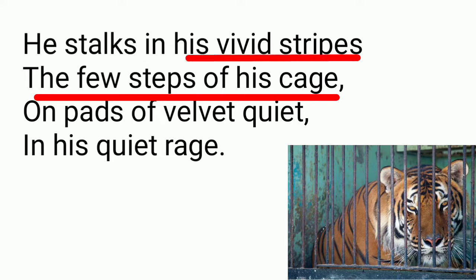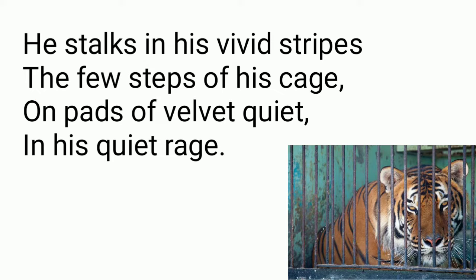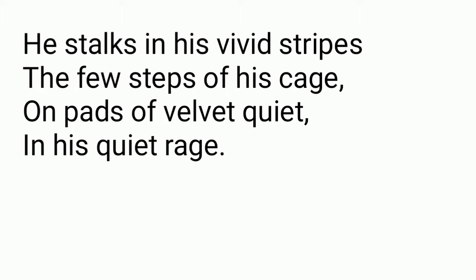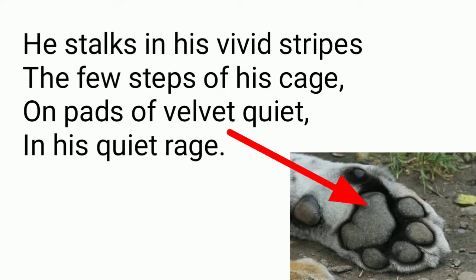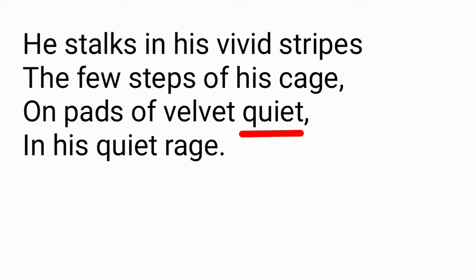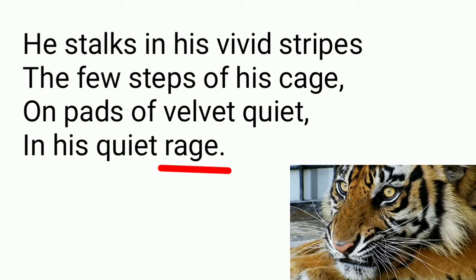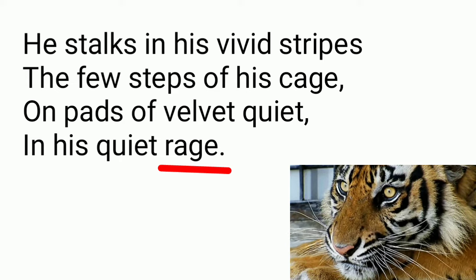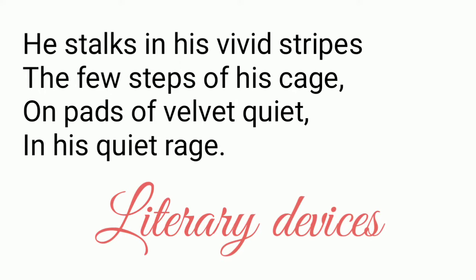The tiger can take only a few steps because the cage is very small and it is not easy to move in it. One cannot hear the tiger's footsteps because he has very soft feet just like velvet. The paws are covered with velvet, and that is why when the tiger walks, no sound of his footstep can be heard. The tiger tries to control his anger by quietly walking in the limited area of his cage. He is angry because he is not free.